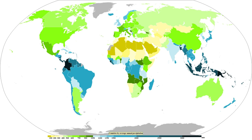Convective rain, or showery precipitation, occurs from convective clouds, such as cumulonimbus or cumulus congestus. It falls as showers with rapidly changing intensity. Convective precipitation falls over a certain area for a relatively short time, as convective clouds have limited horizontal extent. Most precipitation in the tropics appears to be convective; however, it has been suggested that stratiform precipitation also occurs. Graupel and hail indicate convection. In mid-latitudes, convective precipitation is intermittent and often associated with baroclinic boundaries such as cold fronts, squall lines, and warm fronts.